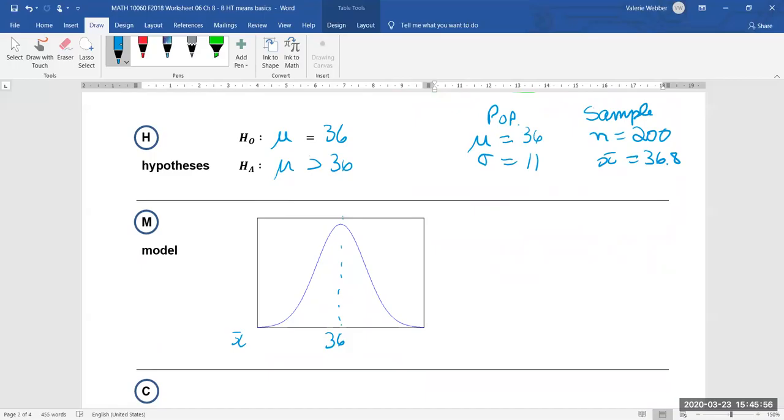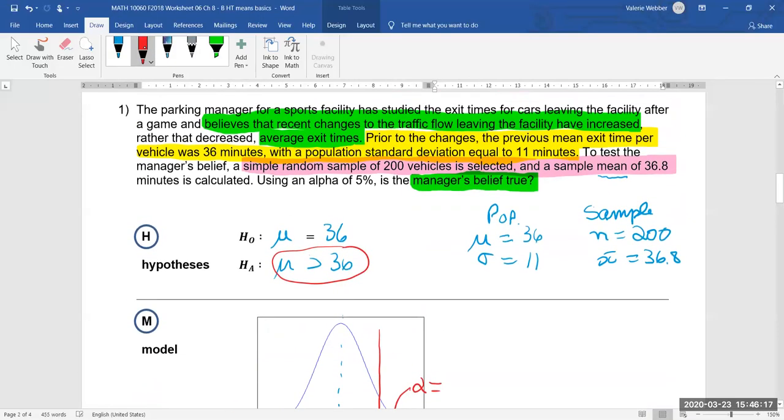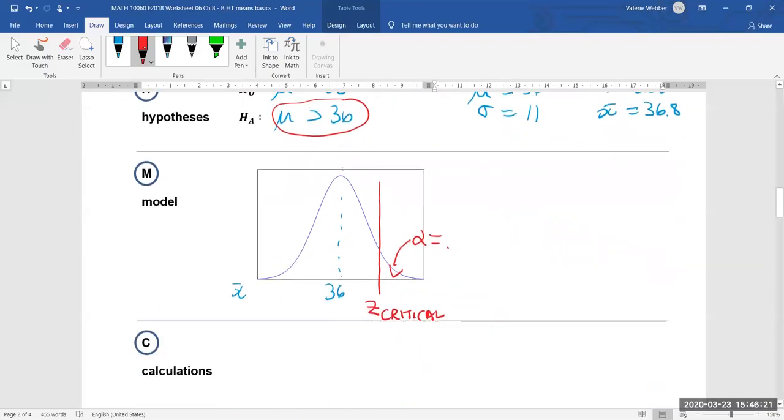We're doing a greater than test so notice here a greater than test. So we're going to have some type of little bar here and that's going to represent our zed critical and this will represent our alpha and remember our alpha if we go back to the question alpha of five percent okay and then this is going to be our reject H naught region.